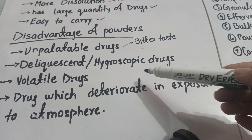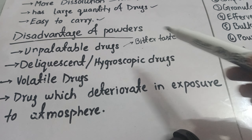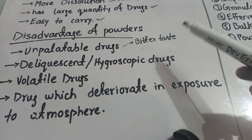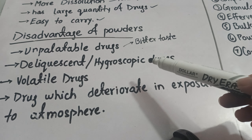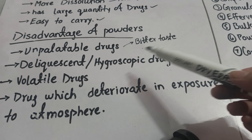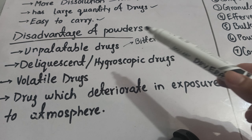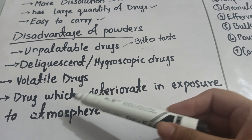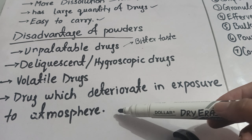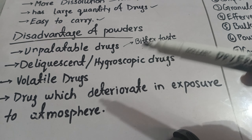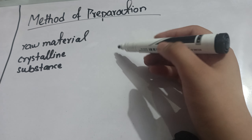The second disadvantage is that some drugs are deliquescent or hygroscopic — meaning they can easily absorb moisture. Since powders are exposed to the external environment, deliquescent drugs cannot be given in the form of powder. Volatile drugs also cannot be given in powder form. Additionally, drugs that easily deteriorate after exposure to the atmosphere cannot be given as powders either.